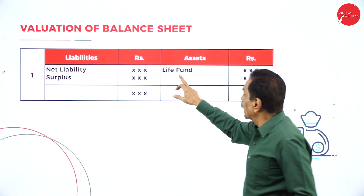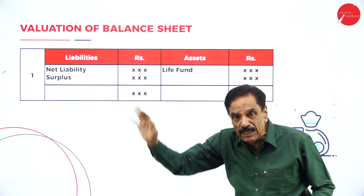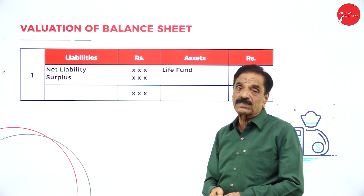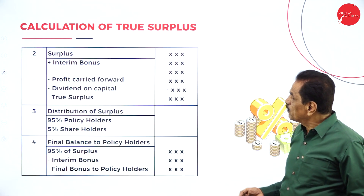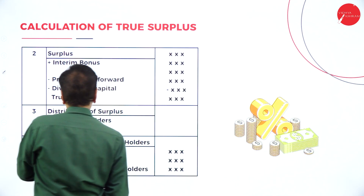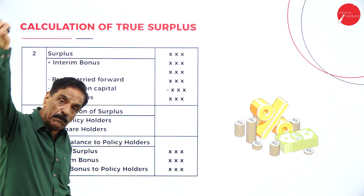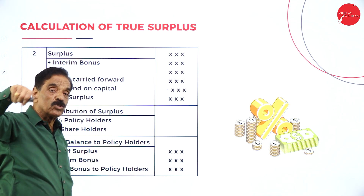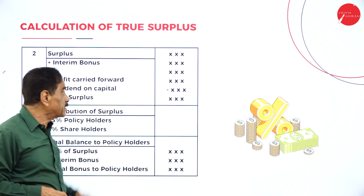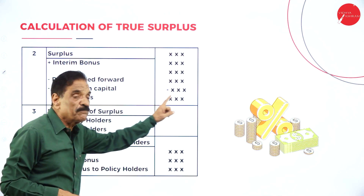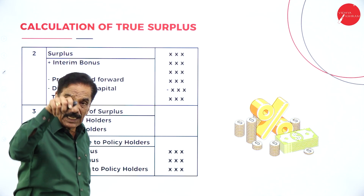I will show the format. In the valuation of balance sheet: life fund at the end, minus whatever the net liability available at the end of that year, gives the surplus. This is the first step. Once you have the surplus, we calculate the true surplus: surplus as per balance sheet, add interim bonus already paid — they should be added back to know the real surplus. Out of that, any profit carried forward should be deducted, and any dividend on capital should be deducted.